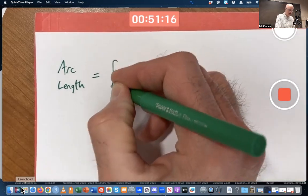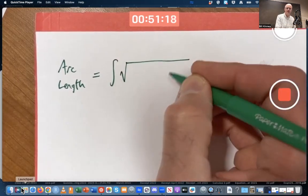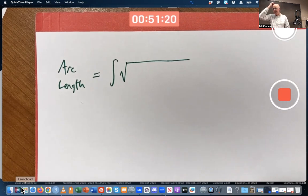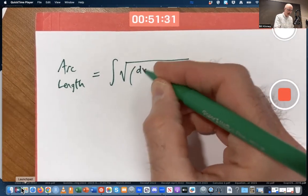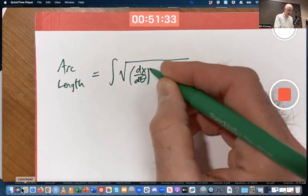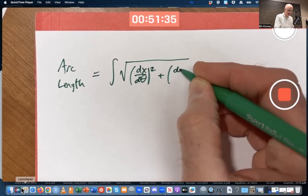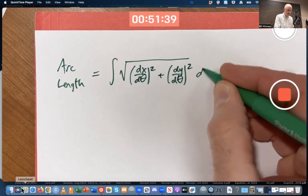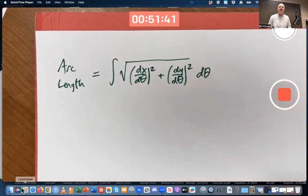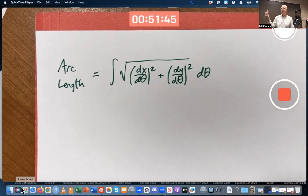It's still the integral of square root of the derivative of x with respect to the parameter squared, plus the derivative of y with respect to the parameter squared. The parameter is theta. So I'd write dx dθ squared plus dy dθ squared, integral with respect to theta, over whatever interval that theta is varying over.